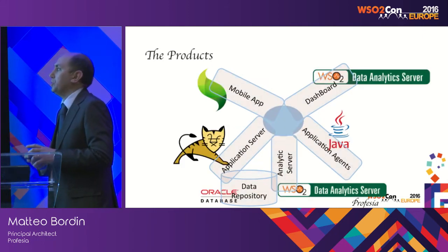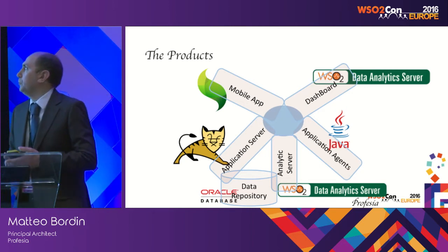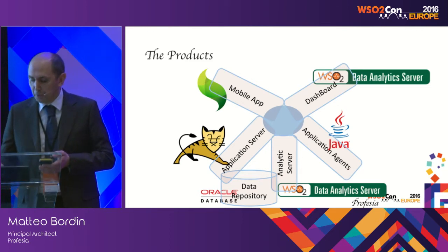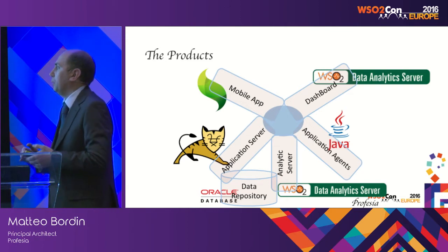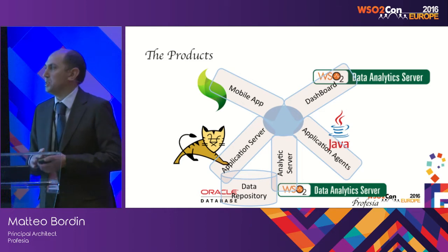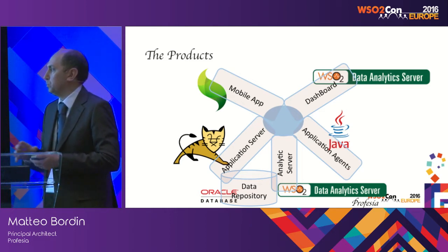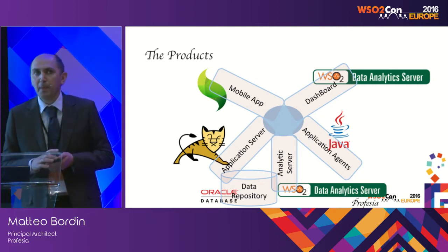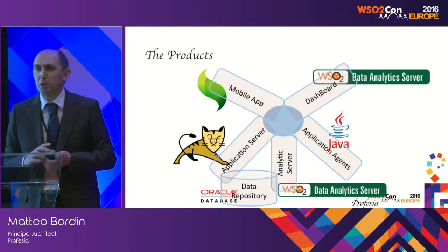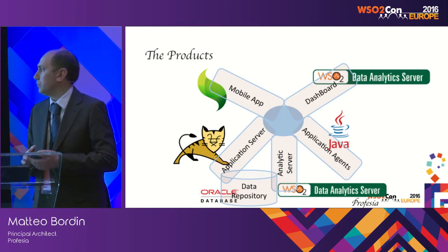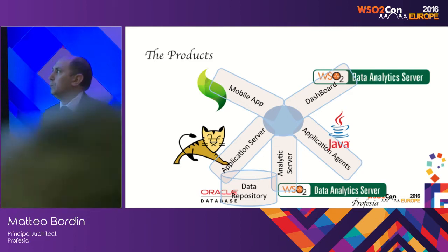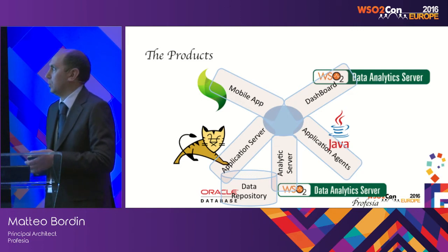Which applications did we use for this solution? For the dashboarding and analytics server, we use WSO2 DAS (Data Analytics Server). For the application agent, we developed in Java — an agent installed inside the API gateway, enterprise service bus, and other applications, able to communicate directly with the data analytics server. We also developed a simple J2EE application inside Tomcat, responsible for providing data to the mobile application. The data is stored inside an Oracle database, the common infrastructure of our customer.